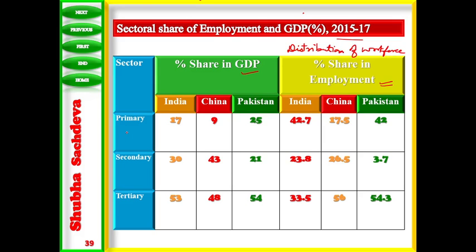If we talk about the primary sector, that means agriculture — in India, the contribution of agriculture to GDP is 17 percent. The contribution of the secondary sector to India's GDP is 30 percent, and the tertiary sector contributes 53 percent.